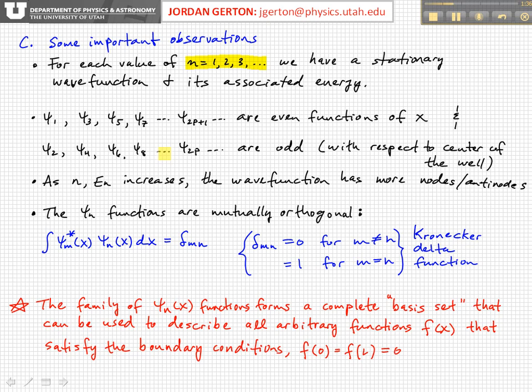We noted that as the quantum number n increases, then the energy increases, and the wave function acquires more nodes and anti-nodes with increasing energy. That's one way to actually qualitatively determine how much kinetic energy a particle has in a certain region. If you plot the wave function and it has a lot of wiggles, a lot of nodes and anti-nodes in a particular region, then that means that it has high kinetic energy.